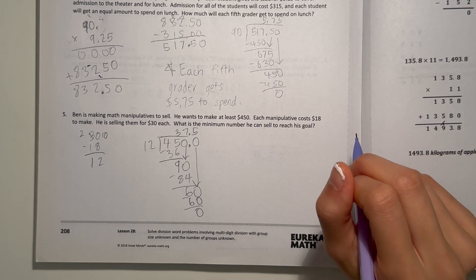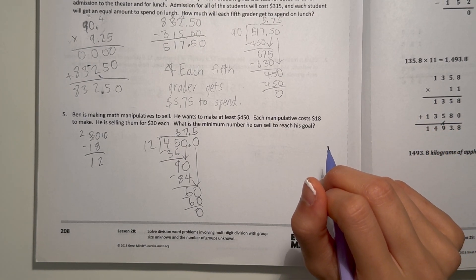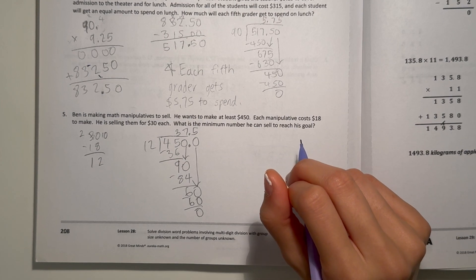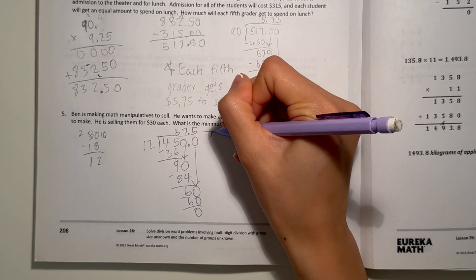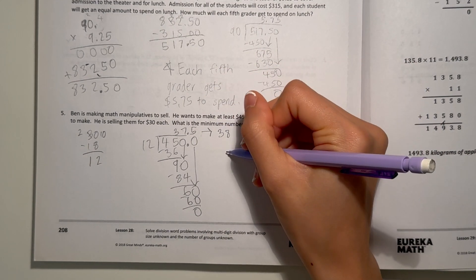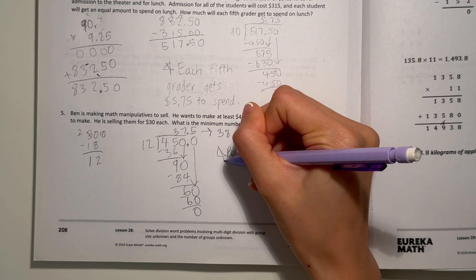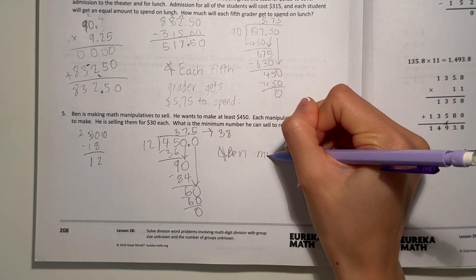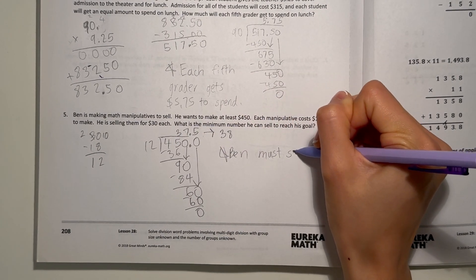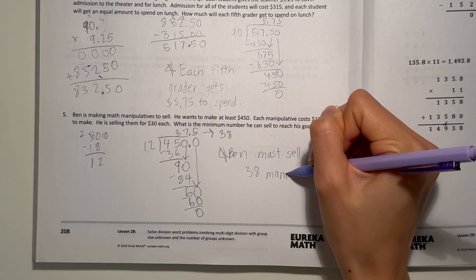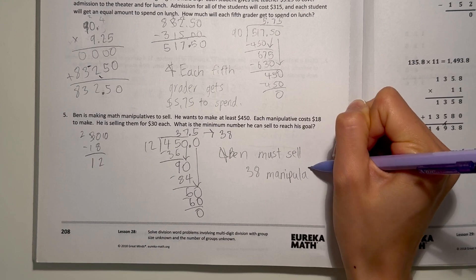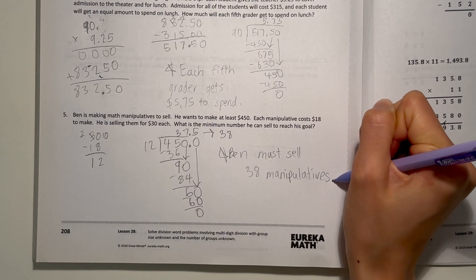That's how many Ben needs to sell, but he can't sell half a manipulative. If we have 37, that would not be enough. So I'm going to round to the nearest whole number, which is 38. That means Ben must sell 38 manipulatives.